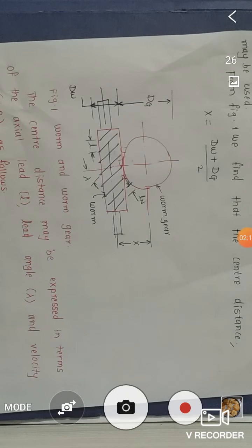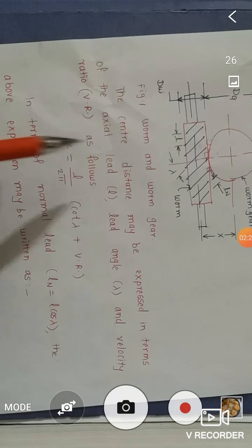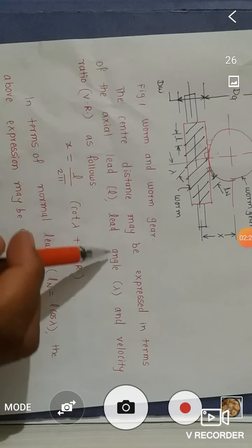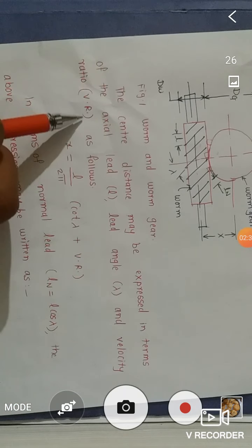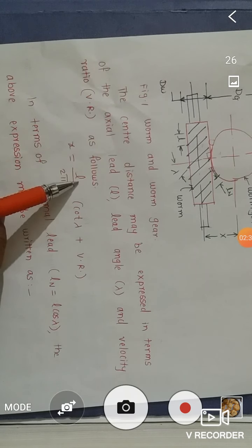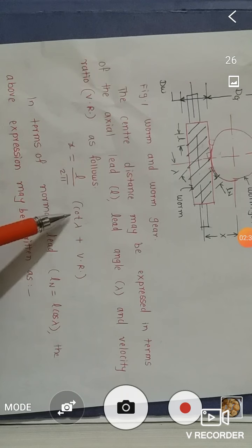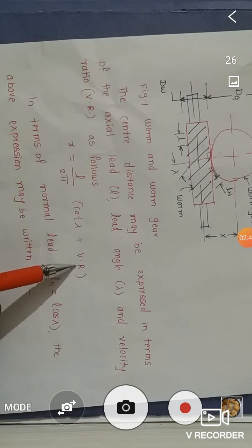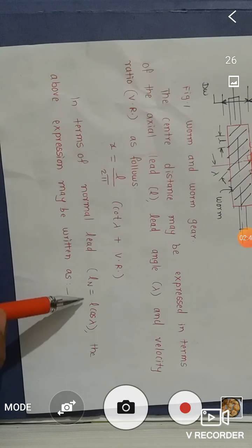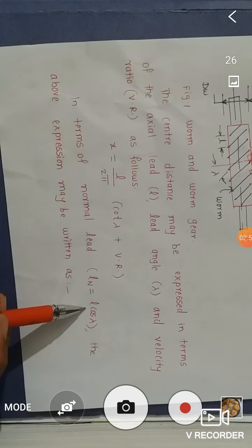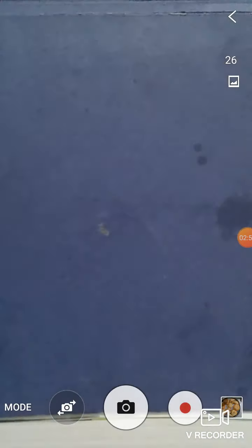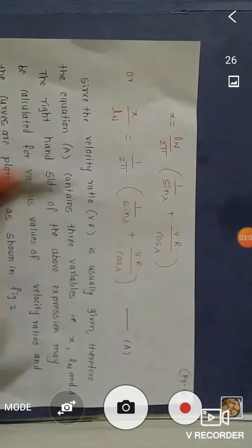The center distance may be expressed in terms of the axial lead L, lead angle lambda, and velocity ratio as follows: X equals L divided by 2π into (cot λ + velocity ratio). In terms of normal lead, LN equals L times cos λ.